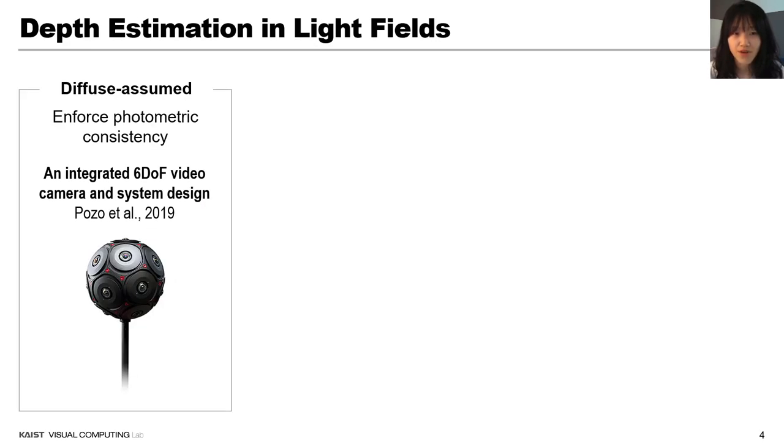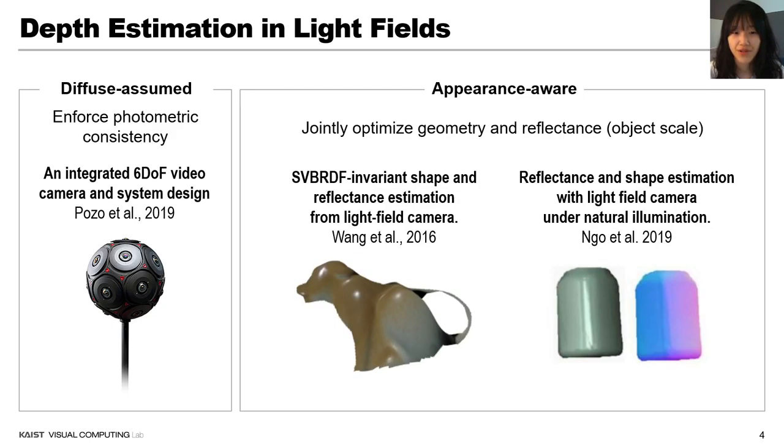Among previous works on depth estimation in light fields, many works assume diffuse material and enforce photometric consistency. Pozo et al. proposed a matching-based method for 360 depth estimation from fisheye images.